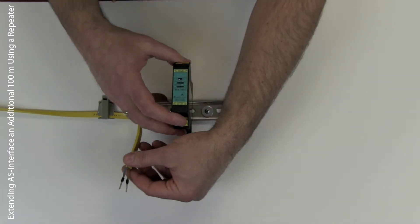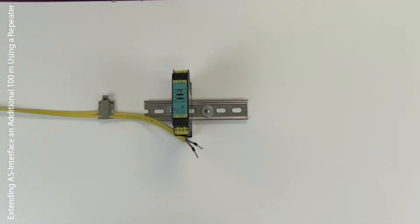If you want to extend AS interface an additional 100 meters, what you want to do is add a repeater.